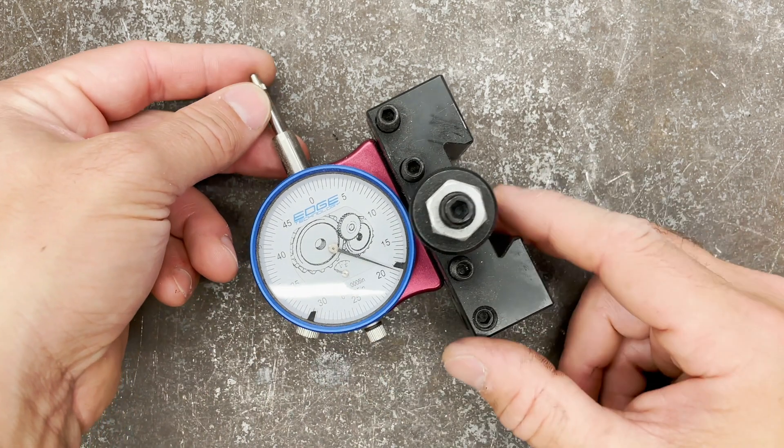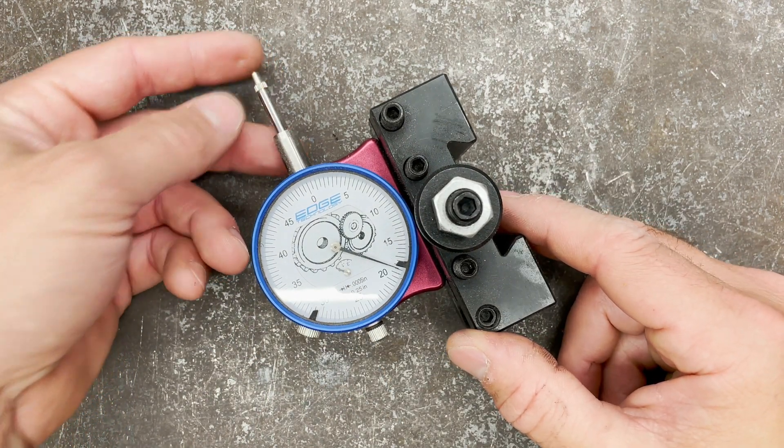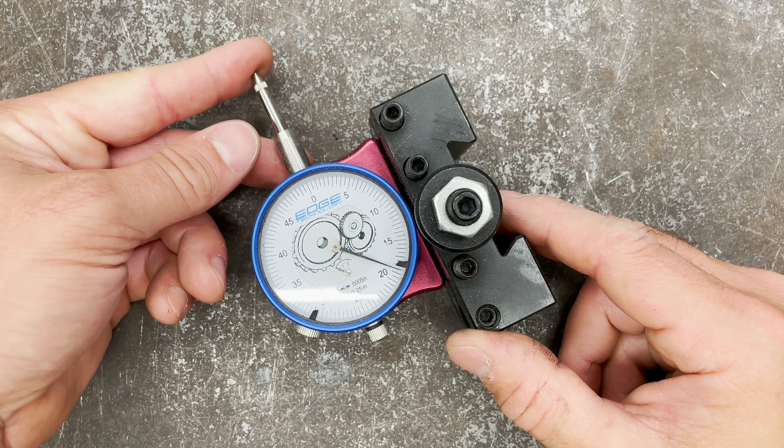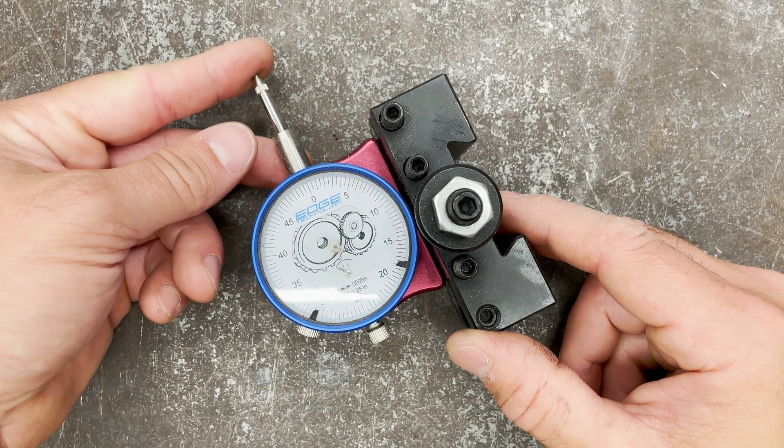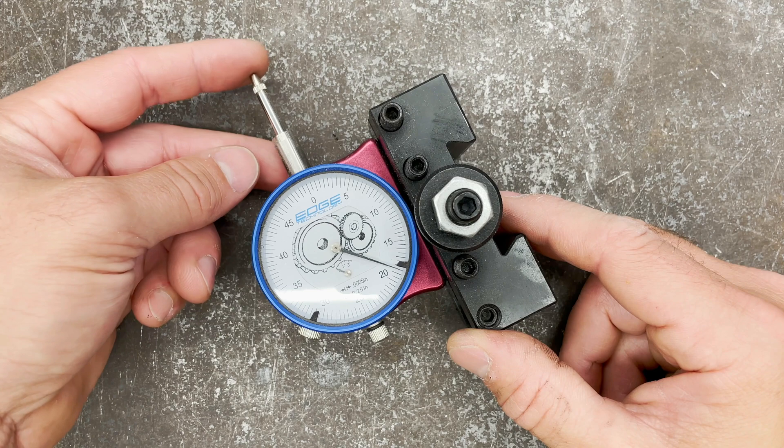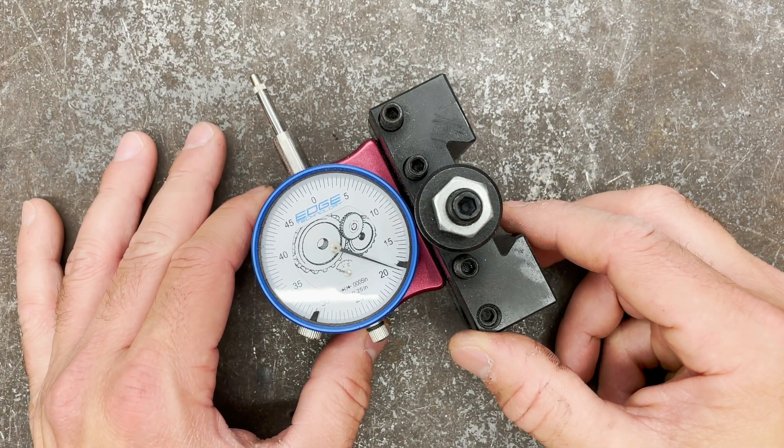Each increment here is half of a thousandth, so five ten-thousandths of an inch. It's real accurate, real small increments. It's got nice movement on it. It's got a nice little ball end here, so it rolls nicely if you've got a smooth surface finish.